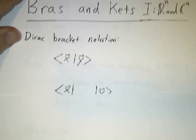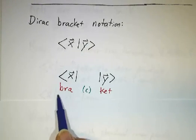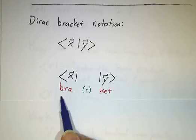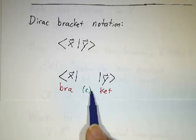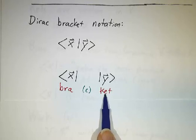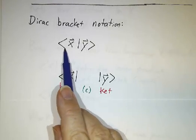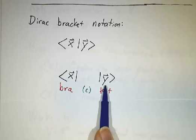Now Dirac said you should think of this bracket as being made of a bra and a ket — two separate pieces. We're going to define what these mean. We're going to have bras and kets, and we're going to get that the inner product, this bracket of x and y, is going to be the bra times the ket.